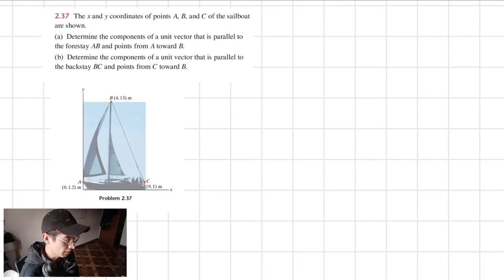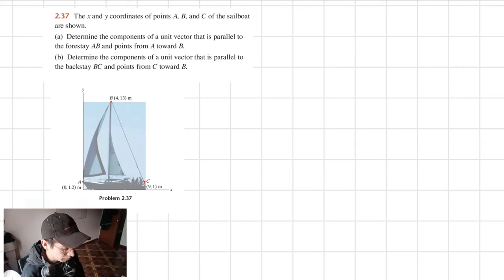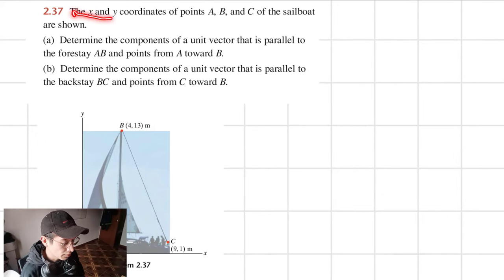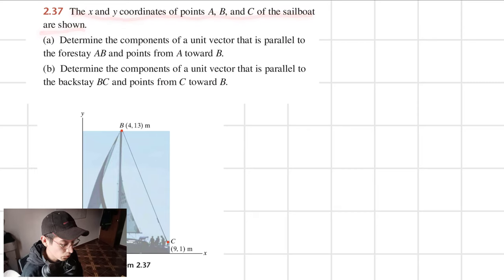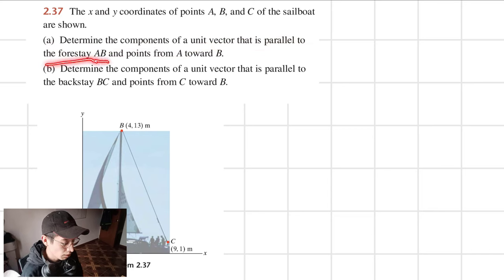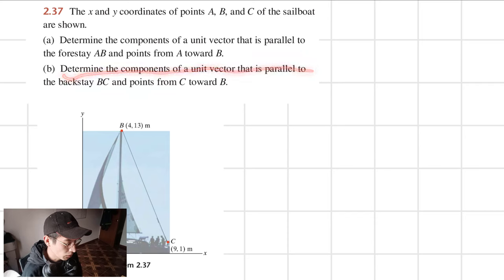We will solve exercise number 2.37. The x and y coordinates of points A, B, and C of the sailboat are shown. Determine the components of a unit vector that is parallel to the forestay AB and points from A toward B. Determine the components of a unit vector that is parallel to the backstay BC and points from C toward B.